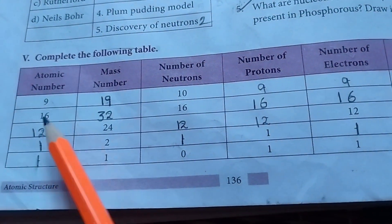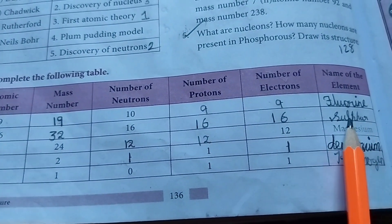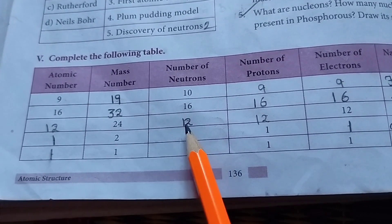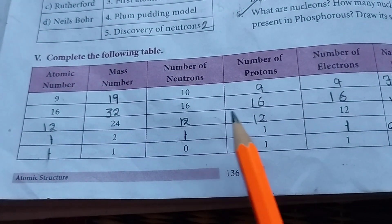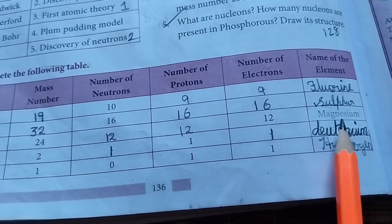Then atomic number 16, 32, 16, 16, 16. The element is sulfur. Atomic number 12. Mass number 24. Then number of neutrons 12. Number of protons 12. Number of electrons 12. The magnesium.